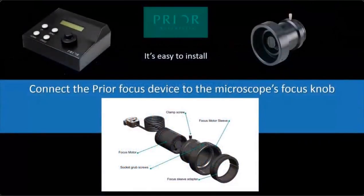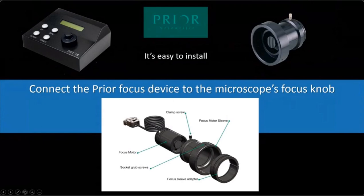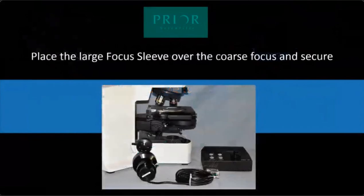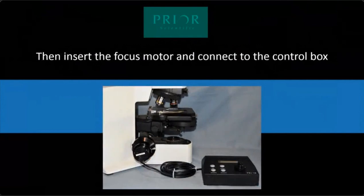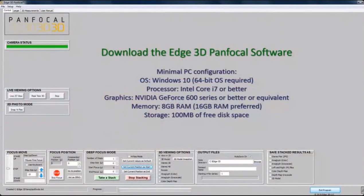The system is easy to set up. It uses the Prior Scientific focus drive, which has a sleeve at the end that fits over the coarse focus of your microscope. Depending on what microscope you have, you use a different sleeve. The motor drive attaches to the coarse focus and creates contact with the fine focus. Here it is on this Olympus microscope — you attach that to the focus and that's pretty much it. The control box hooks up to the computer which runs the pan focal software.